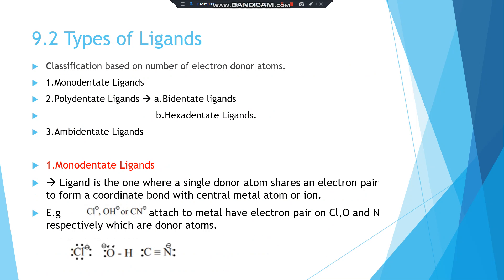The next point is types of ligands. Ligands can be classified as monodentate and polydentate ligands depending on the number of electron-pair donor atoms they have. This classification is based on the number of electron donor atoms. The types are: first, monodentate ligands; second, polydentate ligands — which are further classified as bidentate and hexadentate; and third, ambidentate ligands.